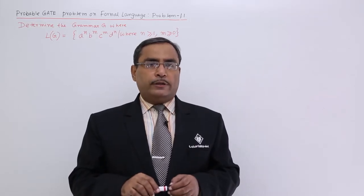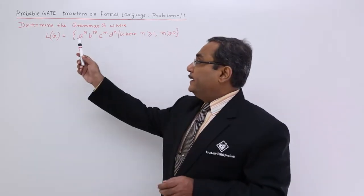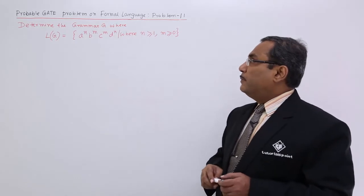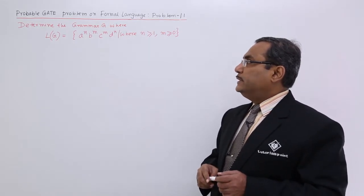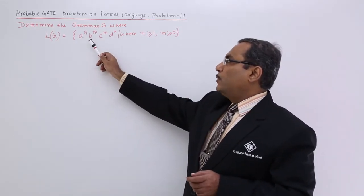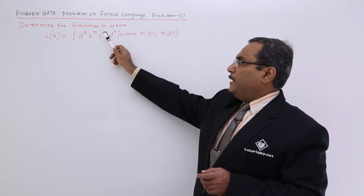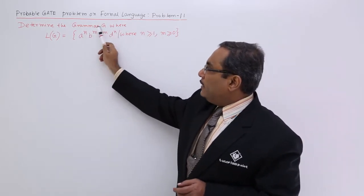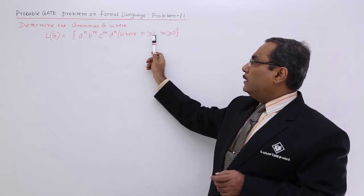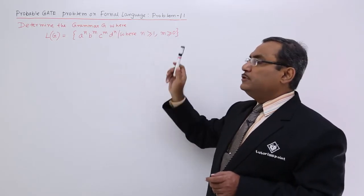Another problem on formal language. The problem is here like this. Determine the grammar g where L(g) equals a to the power of n, b to the power of m, c to the power of m and d to the power of n, where n is greater than or equal to 1 and m is greater than or equal to 0.